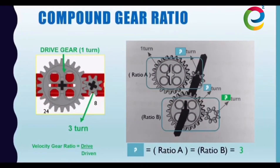Now that we have recapped that, let's move on to what we learned last lesson. In the last lesson, we learned about compound gear ratio. Compound gear ratio happens when you have two sets of gears, set A and set B, linked together using an axle, as you can see here. In this case, both set A and set B's driving gear is the 24-tooth gear, and the driven gear is the 8-tooth gear.